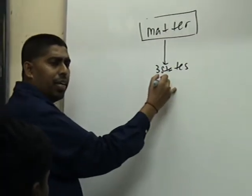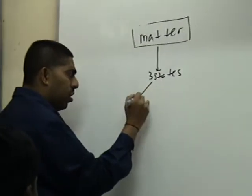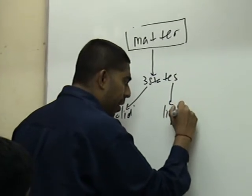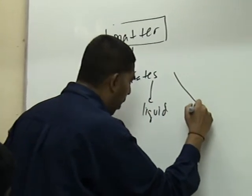What are the three states? What are the three states of matter? Solid, liquid and gas. Three states of matter.